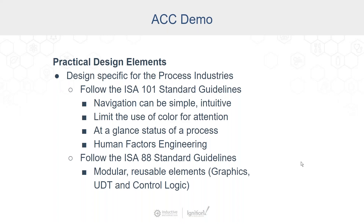Another important standard in process industries that we pay great attention to at ACC is ISA 88, and to some extent this falls into the category of modular design that Mara talked about at length. The idea is that you can use Ignition elements such as UDTs and templated graphics to build standard modules. The way we design systems at ACC is to build those standard modules from the control layer — building the control logic, control module, and equipment module — and then layer that into the paired UDT within Ignition all the way up to the template graphic, so we're building foundational graphics throughout the entire process tightly integrated into Ignition.